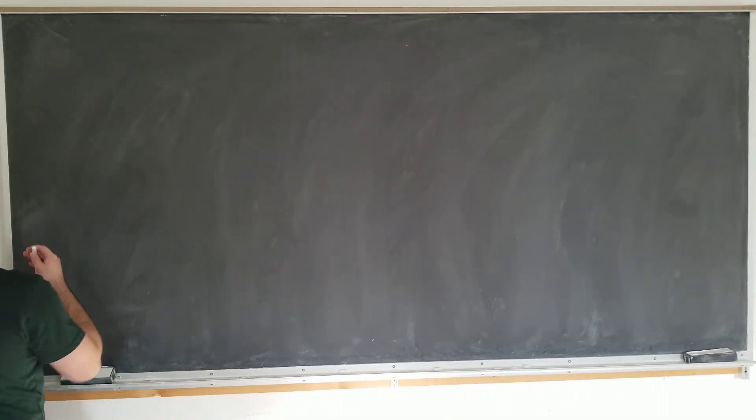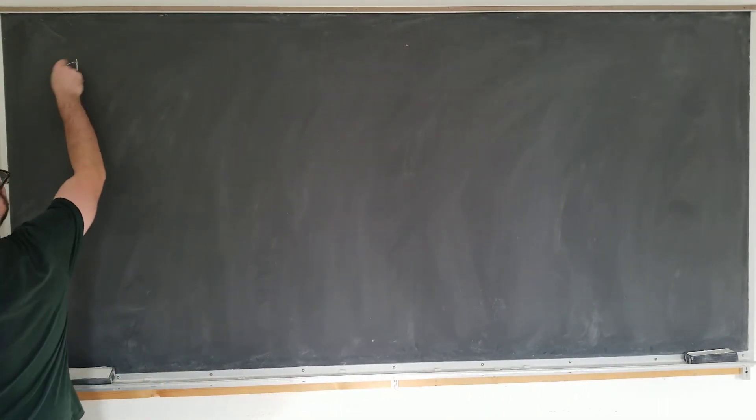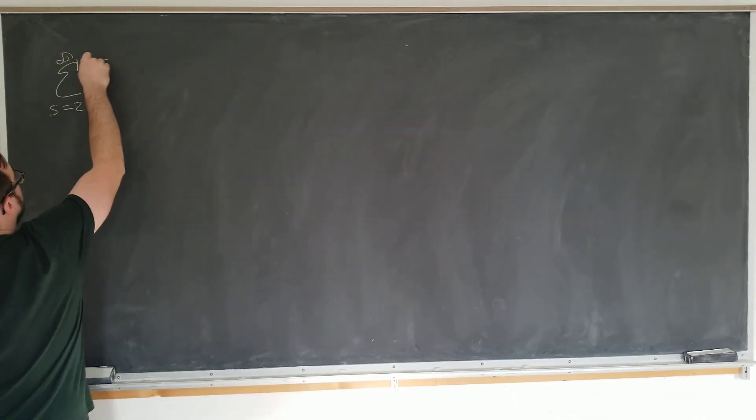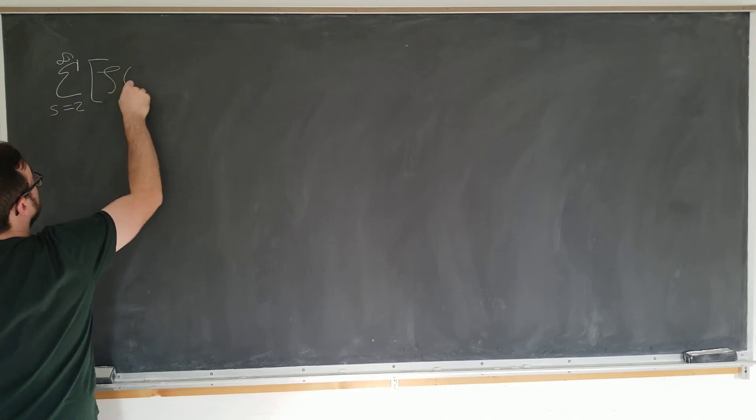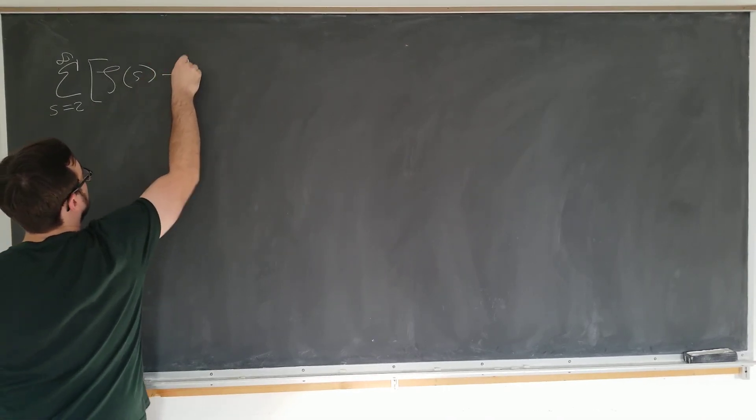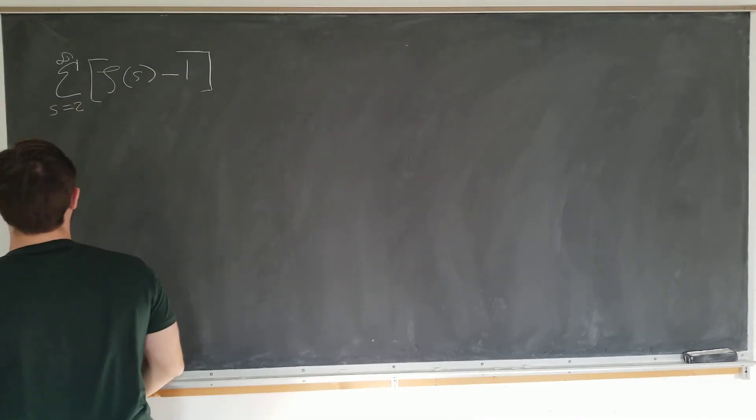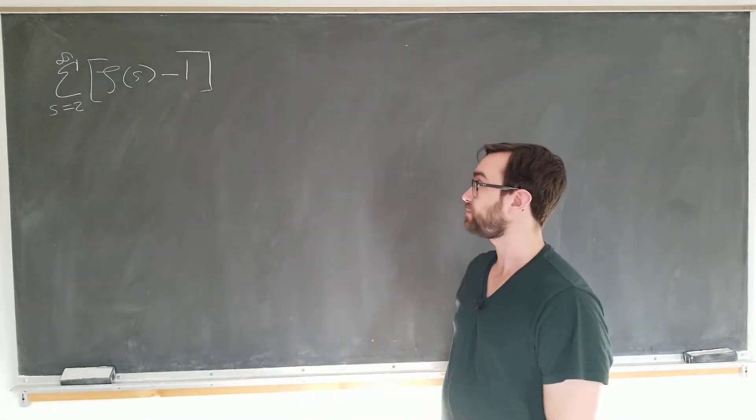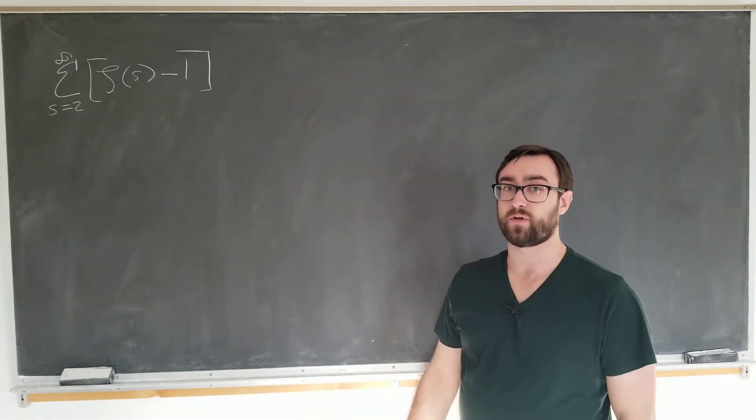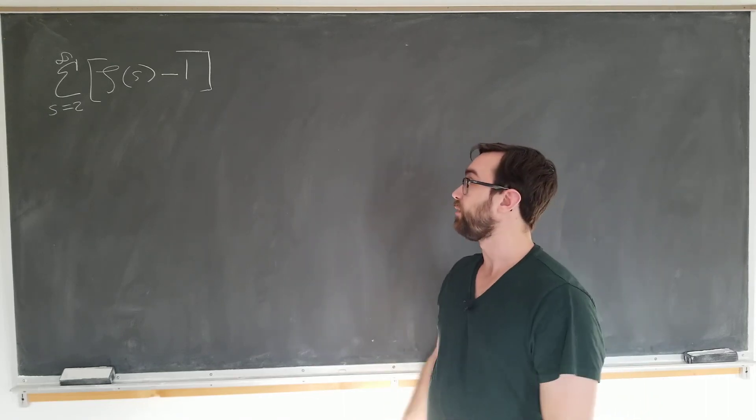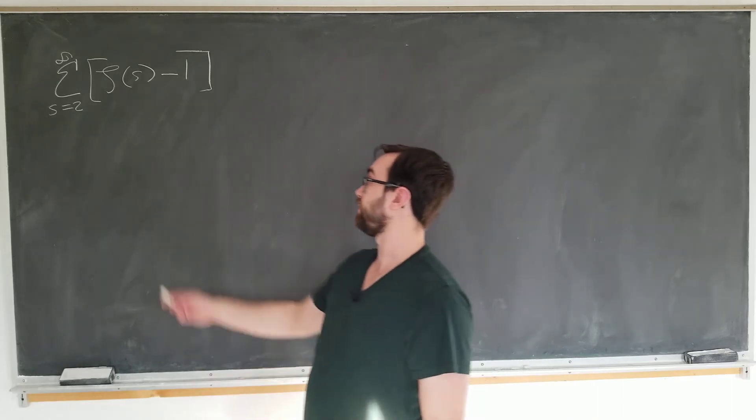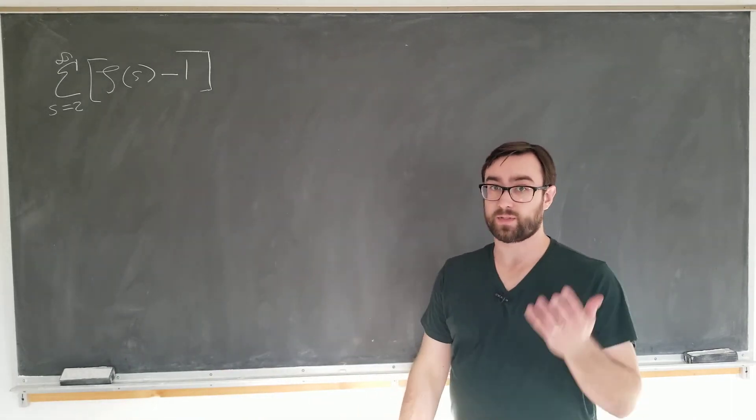You're going to be considering the following sum: sum from s going from 2 to infinity of the quantity zeta of s minus 1. Now why am I doing this? I'm doing this because I can do this. To the best of my knowledge this formula is useless, but the proof is pretty cool and demonstrates your knowledge of the zeta function and a few other things which we'll take a look at now.